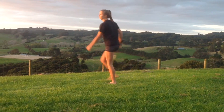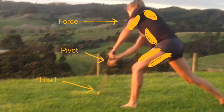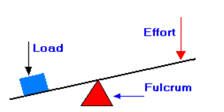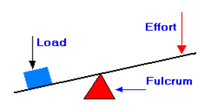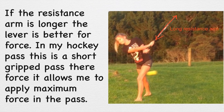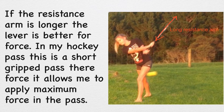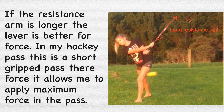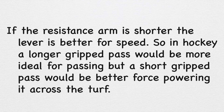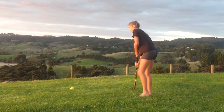For my hockey pass, the pivot is my hands, the load is the ball, and the force is applied by my obliques, abdominals, deltoids, trapezius, biceps and triceps. The pass is a first class lever, where the pivot point is located between the force and the load. If the resistance arm is longer, the lever is better for force. In my hockey pass, this is a short, gripped pass meaning the resistance arm is long, which allows me to apply maximum force. If the resistance arm were shorter, the lever would be better for speed, so a shorter resistance arm is better for quick passing, but a longer resistance arm is better for a forceful shot down the turf.